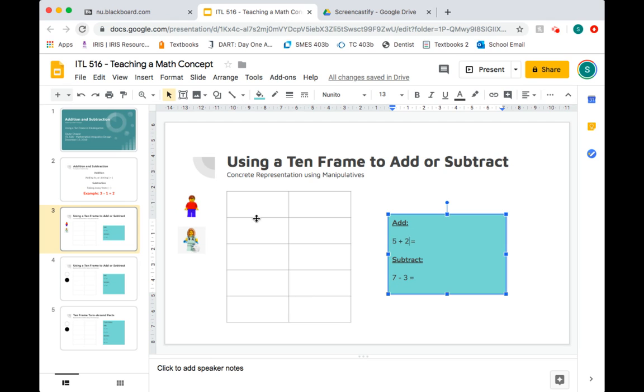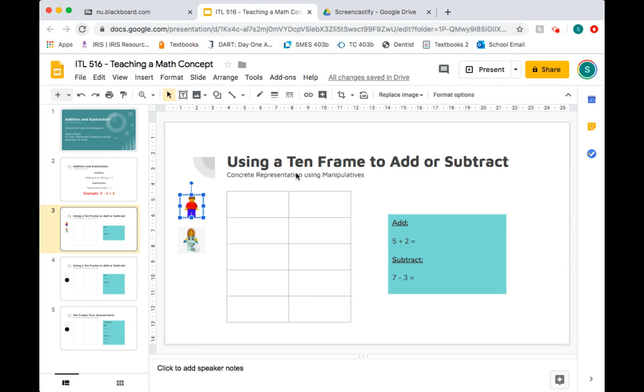Using a 10 frame, I would have my students begin by taking a group of Legos. We'll take Larrys to represent the five. There's one Larry, two, three. They'll take their manipulatives and place them into the box of their 10 frame, which can just be printed on a piece of paper or a worksheet.